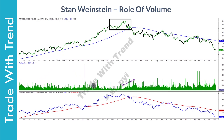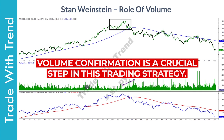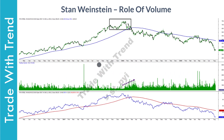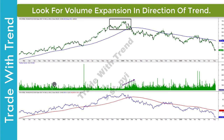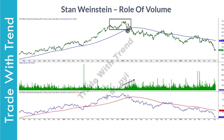Let us now look at the role of volume in Stan Weinstein's trading method. In the first part, I had left out volumes on purpose, mainly because I wanted to explain it here with short sell trades. Volumes represent commitment of traders, so tracking volume is essential in determining potential price movement. When looking for long trades, prefer volume expansion when price moves above the range and above the moving average. Similarly, when looking to short sell, volume expansion should be visible as price moves below the range and below the moving average.